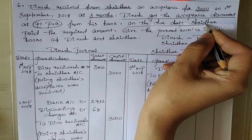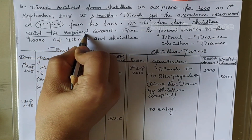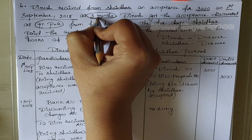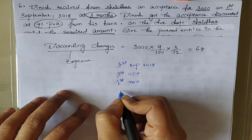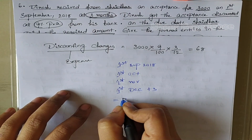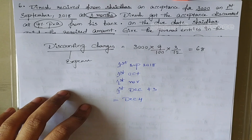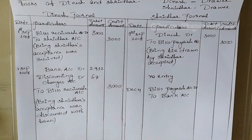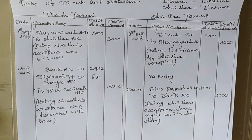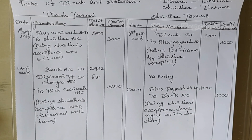On the due date, Shridhar paid the required amount. Bill period is 3 months from 1st September 2018: 1st October, 1st November, 1st December, plus 3 days grace — so due date is December 4th. Journal entry in Shridhar's books is: Bills Payable Account debit to Bank Account. Amount is 3000. Bank is credited because Shridhar paid directly to the bank as the bill was discounted by Dinesh earlier — the new payee is bank, not Dinesh.